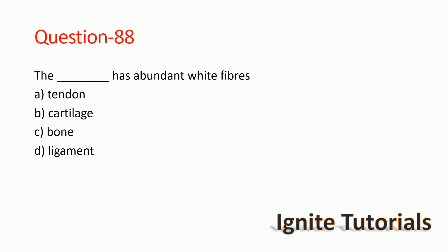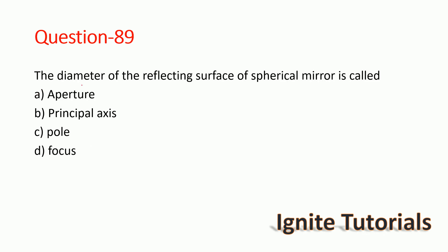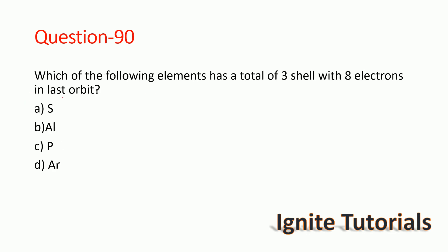Question 87: Which tissue has abundant white fibres? The correct answer is tendon — tendon has abundant white fibres. Question 88: The diameter of the reflecting surface of a spherical mirror is called what? It is called the aperture — that is the correct answer.